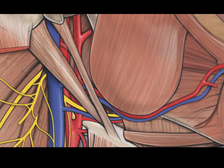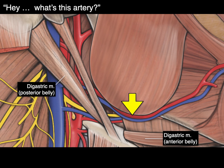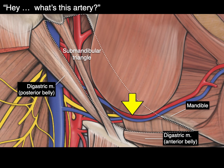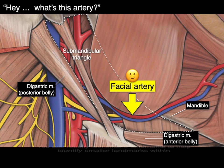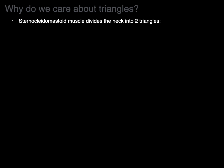Here we have a picture of some anatomy of the head and neck, and someone asks: what's this artery right there? And you're like, oh man, this isn't labeled, what do I do? Let's look for our big lakes. We've got the digastric muscle posterior belly and digastric muscle anterior belly, and then we have the mandible. So we know that's in the submandibular triangle — that's definitely the facial artery. We use readily identifiable landmarks to help identify smaller landmarks within. The sternocleidomastoid muscle becomes one of our big mountain ranges or lakes that helps us divide the neck into two triangles: the posterior triangle and the anterior triangle.